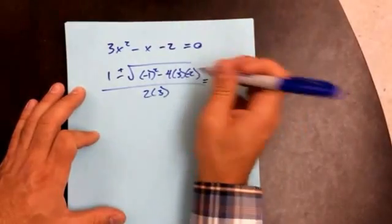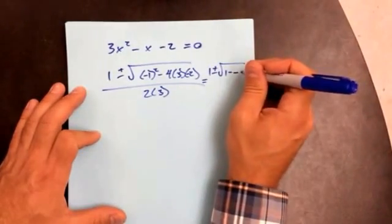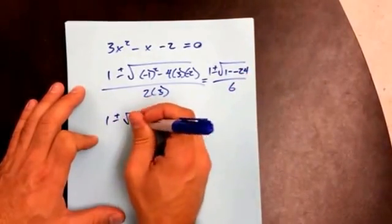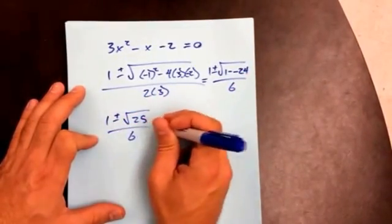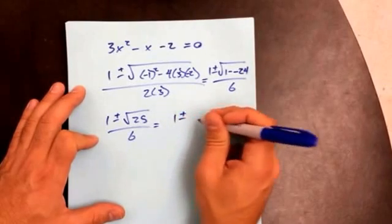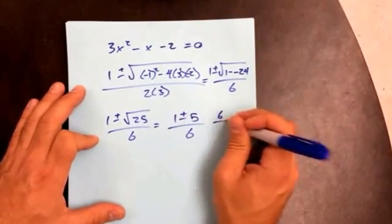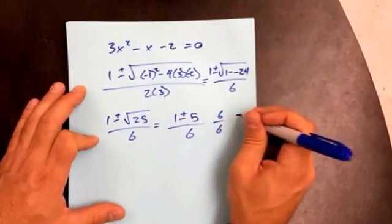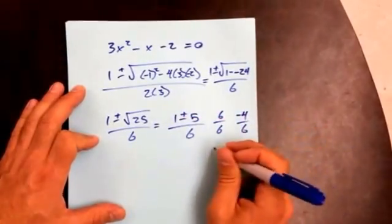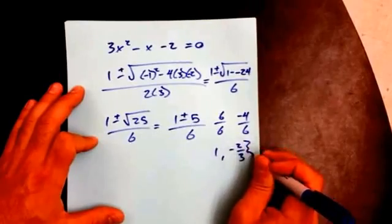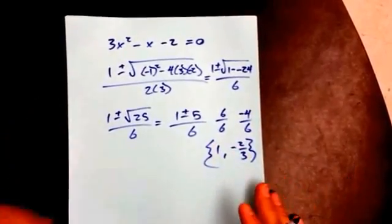Do the square root first. So 1 plus or minus the square root of 1 minus, oops, I forgot the negative right there, negative 24 over 6, which is going to be 1 plus or minus the square root of 25 over 6, which is going to be 1 plus or minus 5 over 6. 1 plus 5 is going to give me 6. 1 minus 5 is going to give me negative 4. So I get 1, comma, negative 2 thirds. These are my two solutions. And hopefully that makes sense to you.